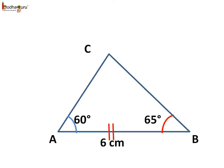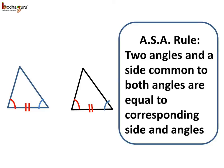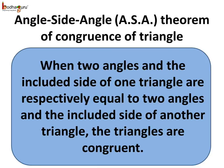So this is how we draw triangle ABC where angle A is 60 degrees, angle B is 65 degrees, and line segment AB is 6 centimeters. If we draw another triangle with the same two given angles and the included side, we will see the two triangles are congruent. So the name: angle-side-angle, the ASA rule — this is the angle-side-angle, that is, the ASA theorem of congruence of triangles.